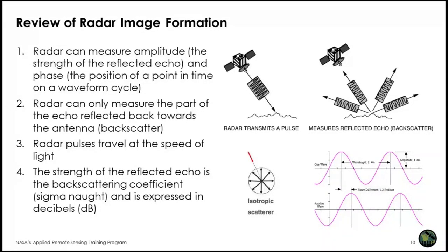Radar pulses travel at the speed of light and only measure the portion of the signal reflected back toward the antenna. Most radars measure amplitude and phase. Amplitude is the strength of the reflected signal, also known as the backscatter coefficient or sigma nought, expressed in decibels. Phase is the position of a point in time on a waveform cycle, measured in angular units like degrees or radians. The phase difference between two images produces a new kind of image called an interferogram.